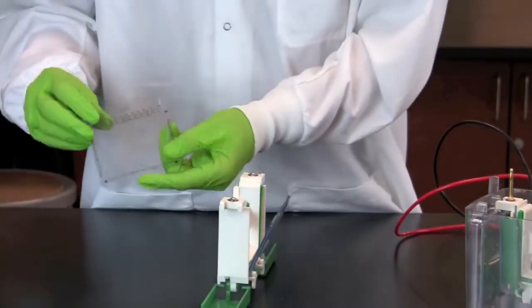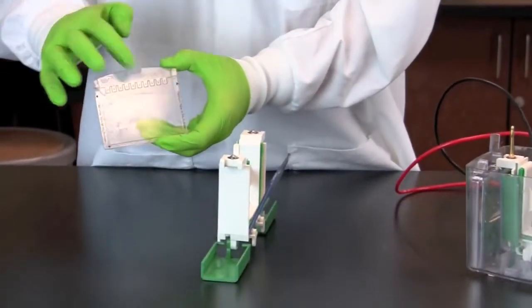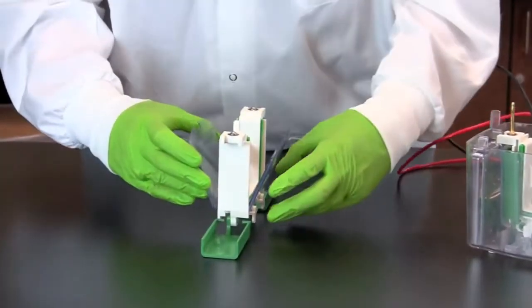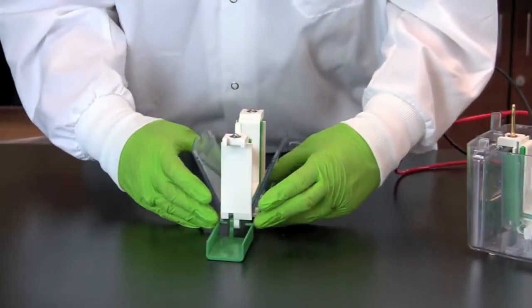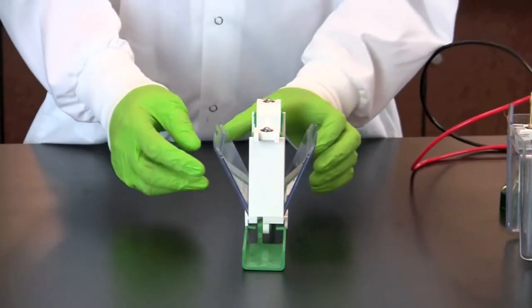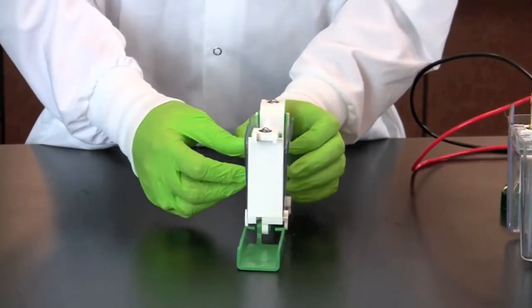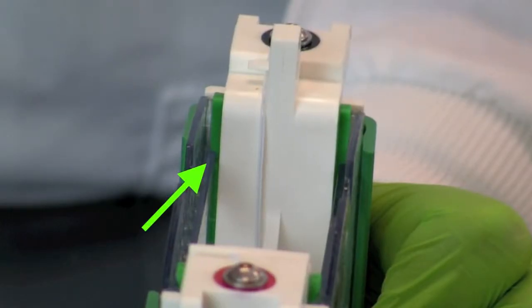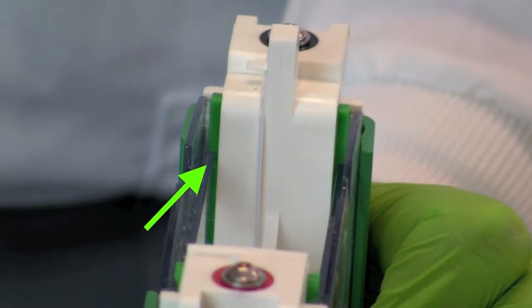Place a second gel on the opposite side of the assembly. If only one gel is run, use a buffer dam to replace the second gel. Push the gels toward each other, making sure they are flush against the notched green gaskets and that the short plates sit just below the notches of the gasket.